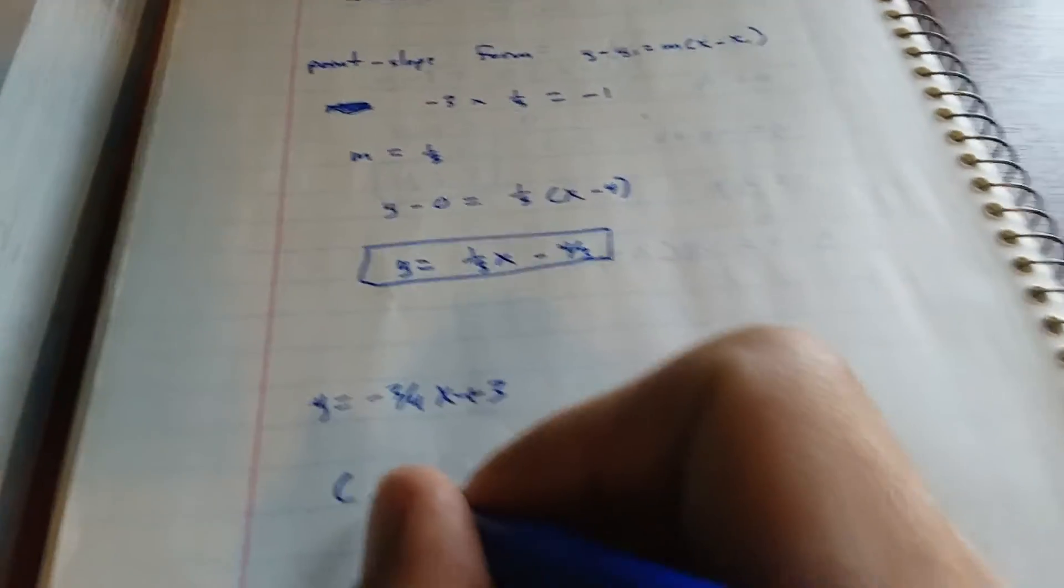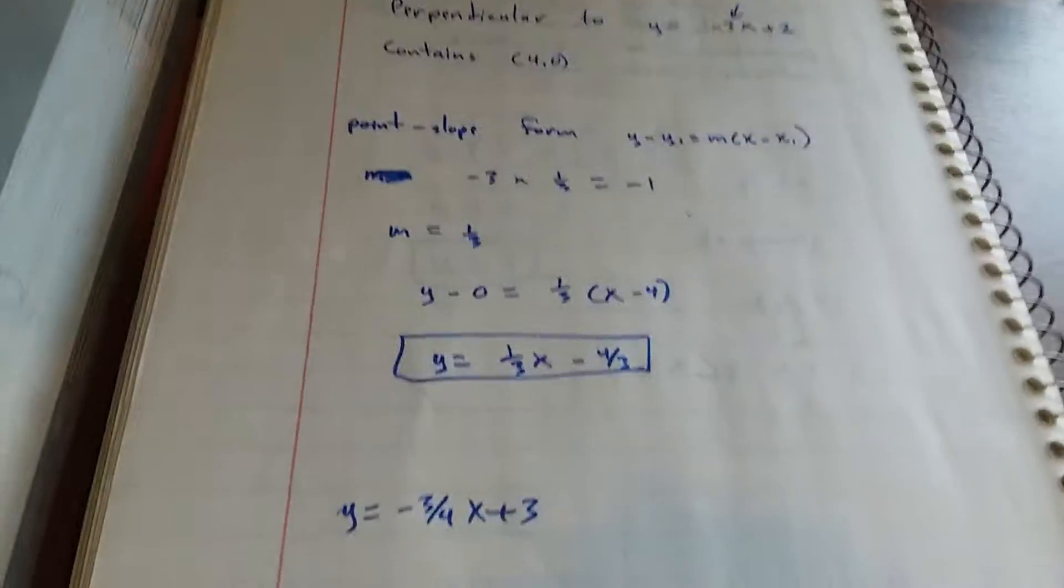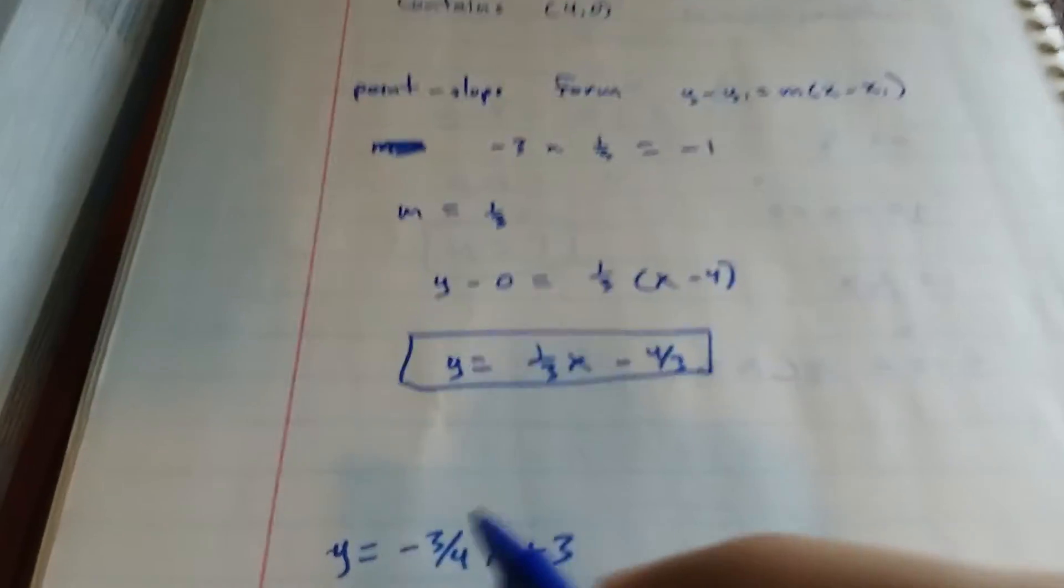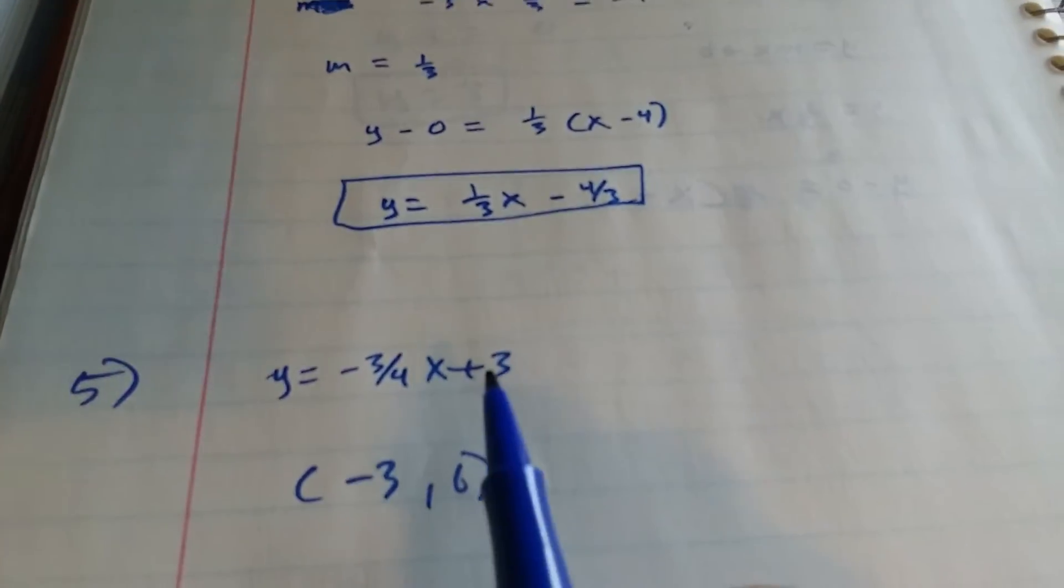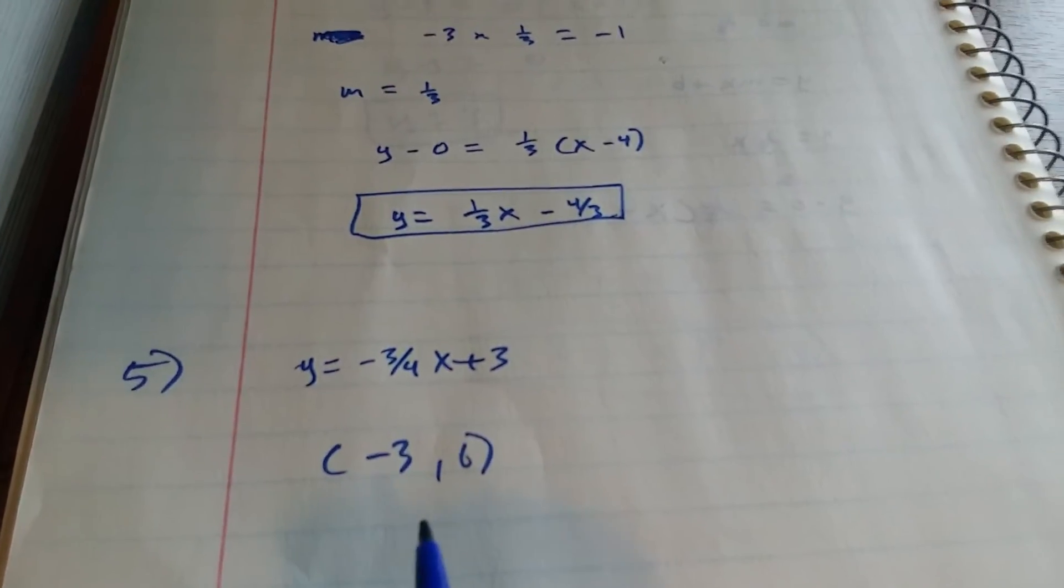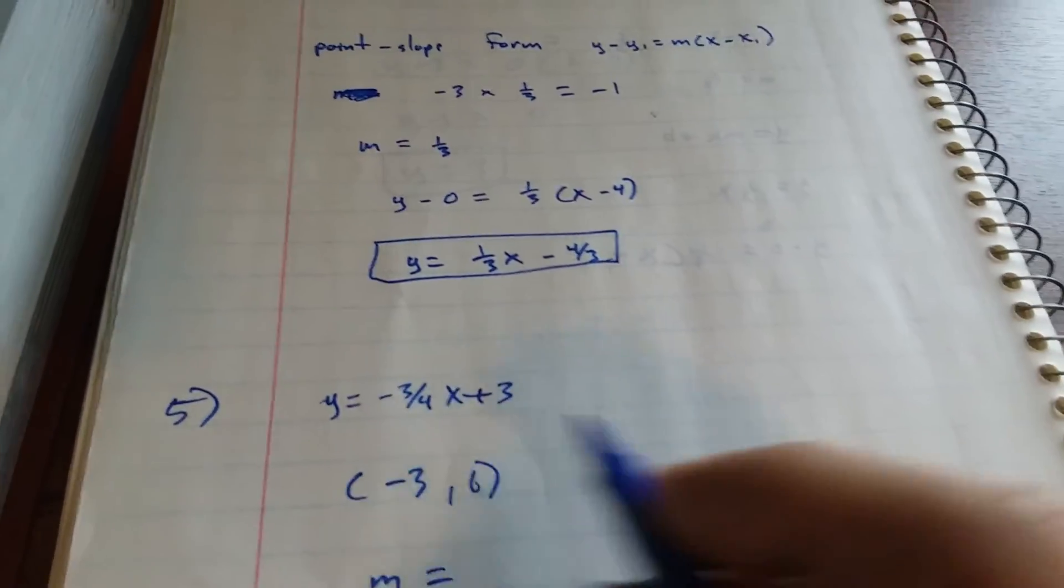Yep, that looks good. So then you're containing the point (-3, 6) and parallel to this. This is sample 5. And then, so m has to be the same since they're parallel.